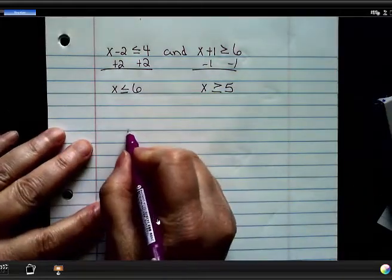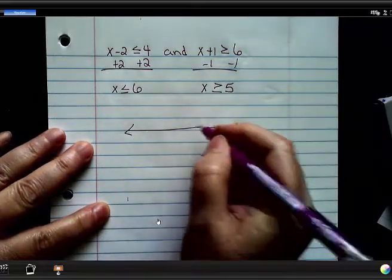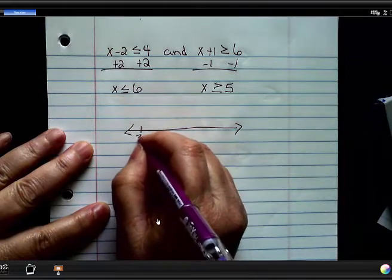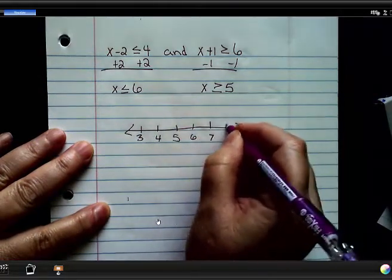So now if I graph these both, I'm going to graph them both on the same number line, one above and one below. So I've got 3, 4, 5, 6, 7, 8.